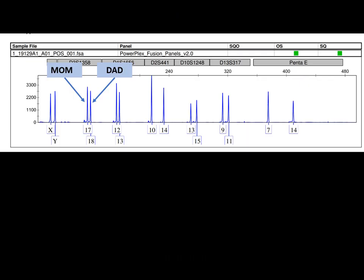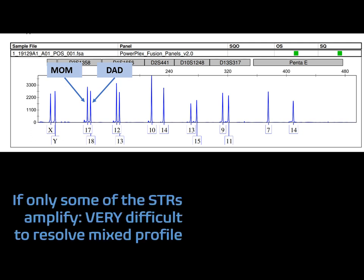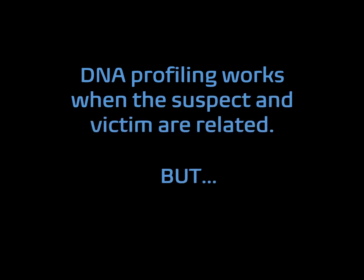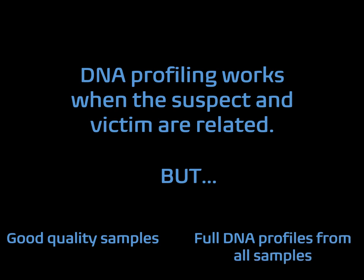So if our alleles are inherited from our parents, this means that half of the alleles on our DNA profile will be the same as half of the alleles present on our parents' DNA profiles. This could pose a problem if the suspect and victim are related. If we only have a partial DNA profile from our crime scene sample, it would be quite tricky to resolve whether the DNA came solely from the victim or if the father's DNA is present, as half of his alleles would be shared with hers. So yes, DNA profiling does work when the suspect and victim are related, but this is given the fact that our crime scene samples are of excellent quality and that there is enough of both the victim's and suspect's DNA present in the crime scene sample.